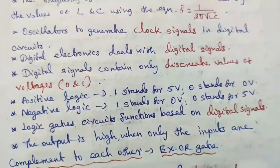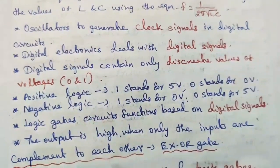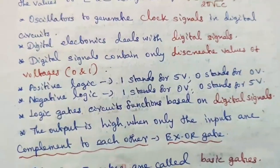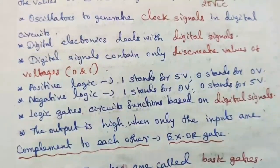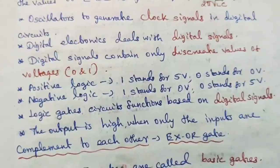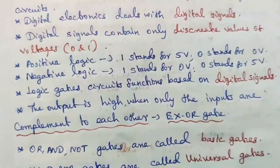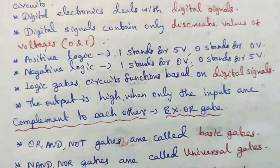Digital electronics deals with digital signals. Digital signals contain only discrete values of voltages, 0 and 1. In positive logic, which we use in logic gates, 1 stands for 5 volt and 0 stands for 0 volt. In negative logic, 1 stands for 0 volt and 0 stands for 5 volt.